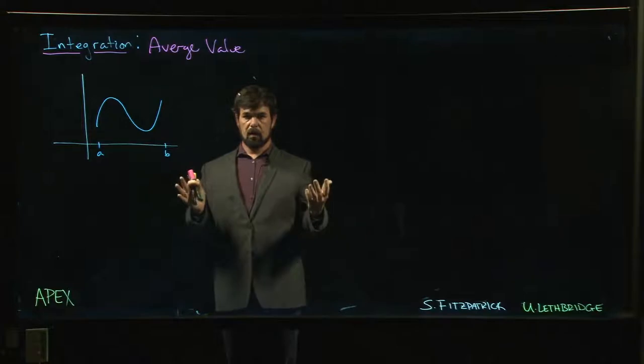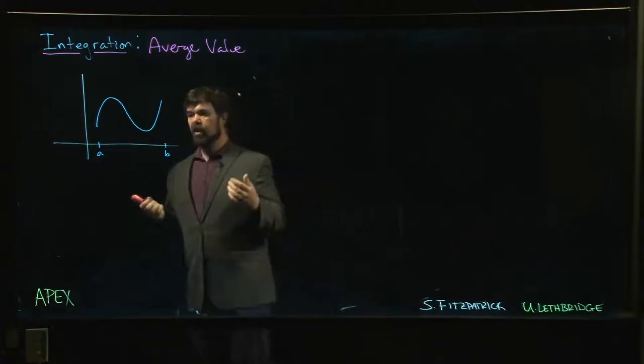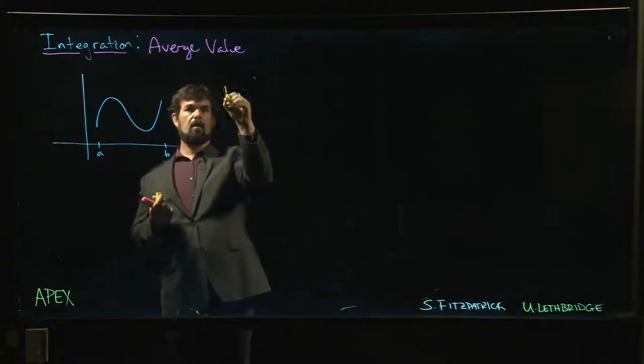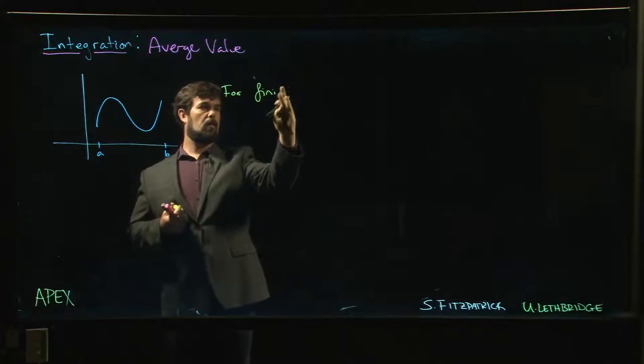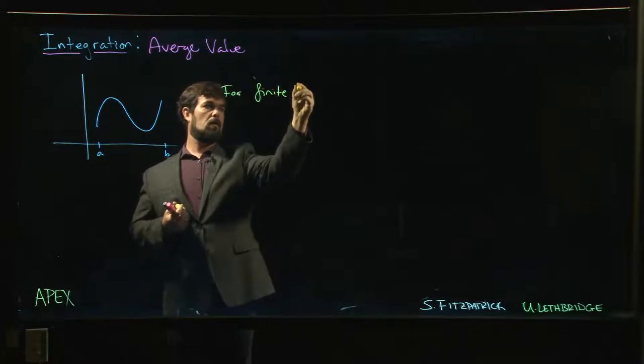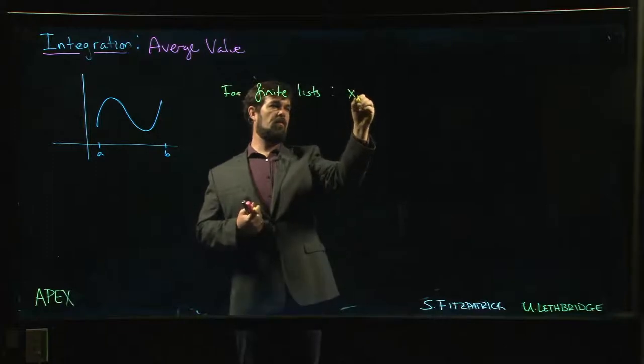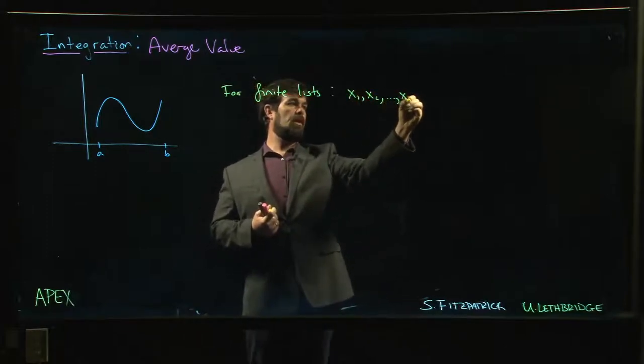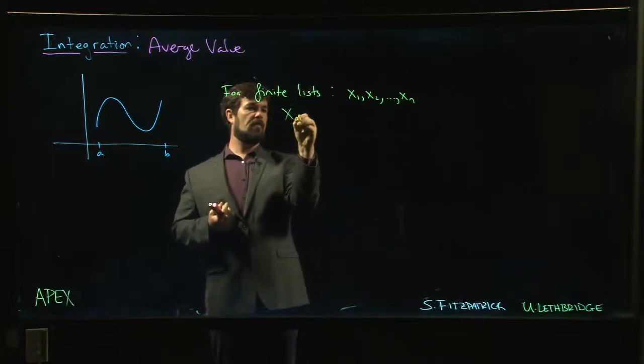Now we want to talk about this idea of average value. We understand how to do average for some finite number of values. For finite lists, if we have values x₁, x₂ up to xₙ, we know how to find the average.